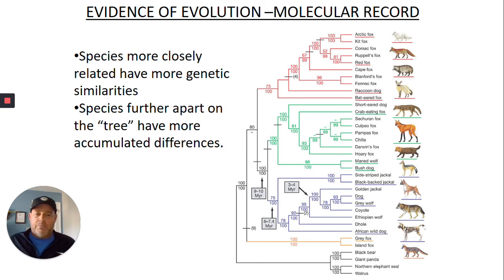More on the molecular record. Species more closely related have more genetic similarities and species further apart on the tree have more accumulated differences. So if you look, there's a bunch of numbers all over this chart and I don't expect you to know them or memorize them or anything, but just the basic concept. If things are really closely related, would they have a higher percent of their DNA matching or a lower percent? Clearly it's going to be the higher, right? So the closer things are like all the types of foxes, they're going to be really close and they're only going to have a small percentage of DNA bases be different where if you look at like a fox and a bear, they're going to be farther apart than a fox and a dog or something like that. So it just kind of, this one's kind of common sense. The more mutations, the more genetic differences there are, the farther apart you're going to be on that evolutionary tree.